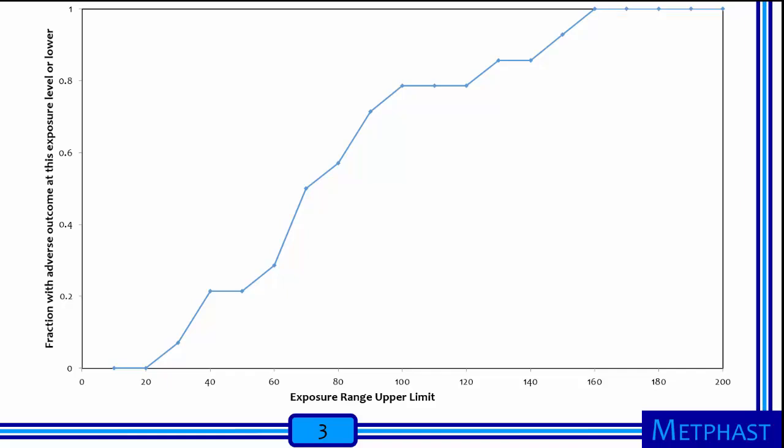Agencies or organizations setting health-based standards often use exposure or dose response curves to determine exposures or doses that limit adverse health outcomes to a certain risk — for example, 1 in 10,000 or 1 in 1 million. For this example, you could determine what exposure limit you would need in order to allow only 1 in 10 participants to experience the adverse outcome, which is the same as allowing 10%. Locate 0.1 on the vertical axis, find where a horizontal line from that point intersects with the curve, then draw a vertical line downward to the horizontal axis. This is further illustrated with the orange arrows in the figure shown here. In this example, an exposure limit of approximately 32 is needed to ensure that only 1 in 10 participants will experience the adverse outcome of being unable to complete any more repetitions.